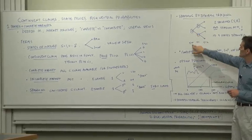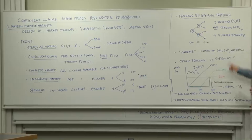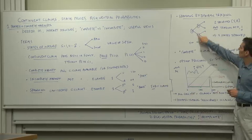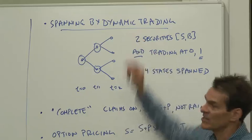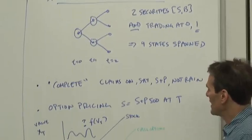So here's an example. Suppose that there are two steps - time zero, one, and two - and the investor can re-trade at time one. Then it turns out that if you have two securities, this stock and this bond, and you can re-trade at time one, then you can span all four states of nature, create four contingent claims out of two securities and the opportunity to re-trade them.